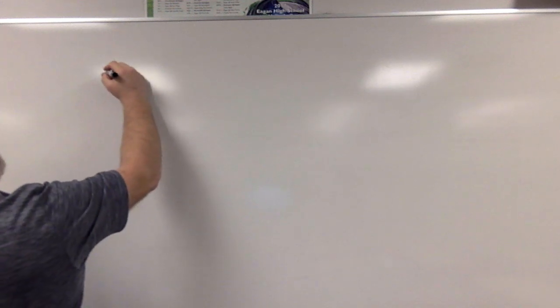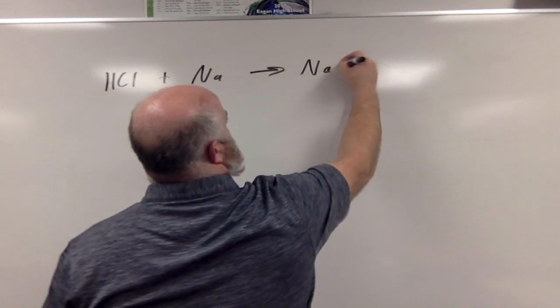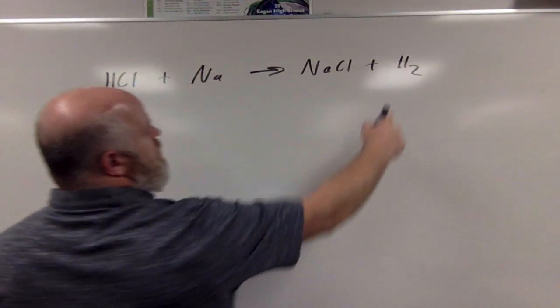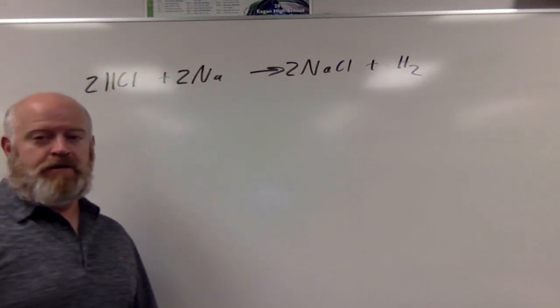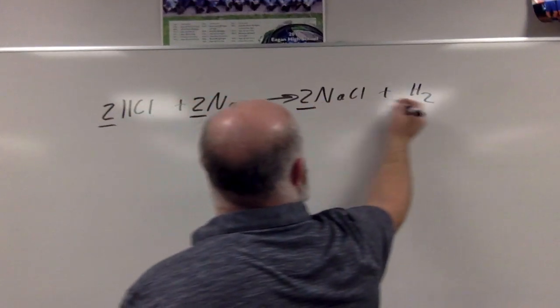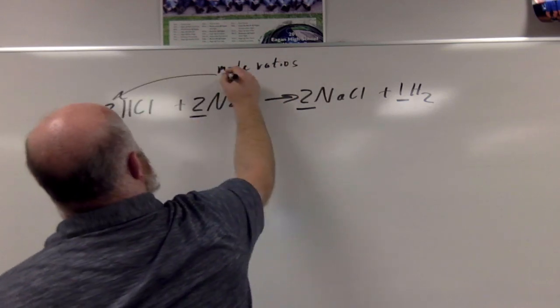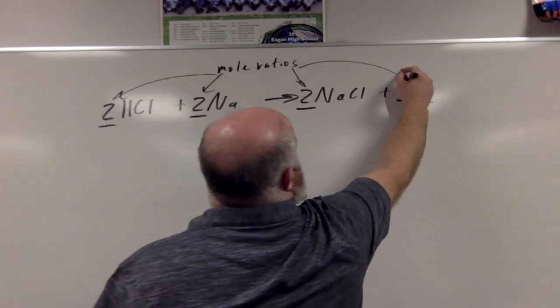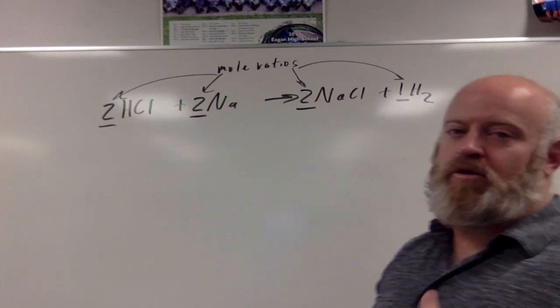First step: write and balance the reaction. We take hydrochloric acid and react it with sodium metal to make sodium chloride and hydrogen gas. Because we have a 2 on H₂, we need a 2 in front of HCl, a 2 in front of Na, and a 2 in front of NaCl to balance this out. From the balanced equation, for every 2 moles of HCl we need 2 moles of Na, we make 2 moles of NaCl, and we make 1 mole of H₂.